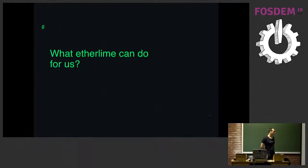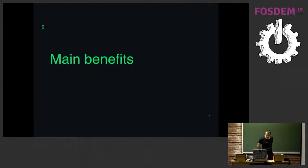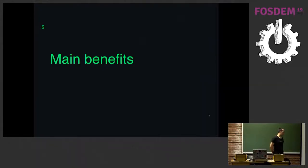EtherLime can test your code. You can run unit tests and write unit tests just as you would for any of your other projects. EtherLime also has a code coverage option so you can check your code coverage, which is really useful for developing smart contracts. The main benefits of EtherLime are that you have a single tool doing all of this. You don't have to browse through and use different tools for all these steps. And it's stable — we have more than 96% code coverage of the library.